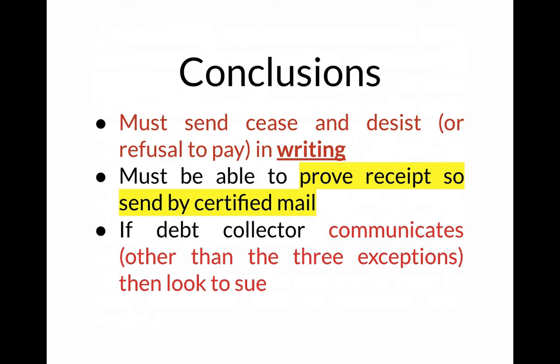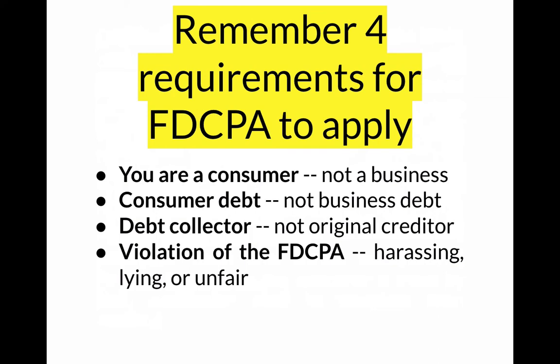Third conclusion: if the debt collector communicates with you other than under those exceptions, I would look to sue them. For the FDCPA to apply, you have to be a consumer with consumer debt — not business debt. You have to be dealing with a debt collector that meets the definition, not the original creditor like Capital One. And you have to have a violation — something harassing, or they lied to you, or they're being unfair.